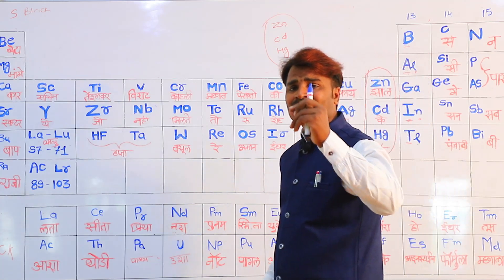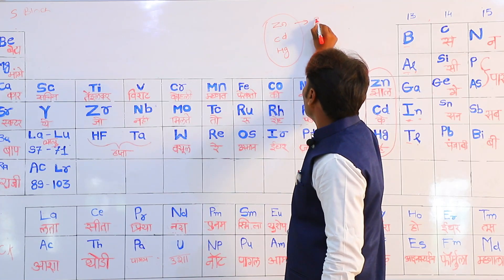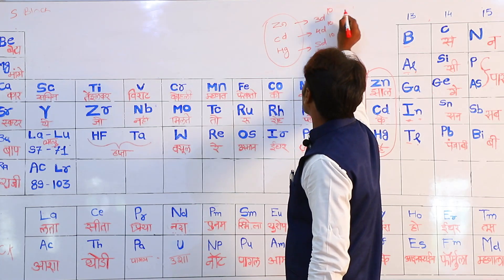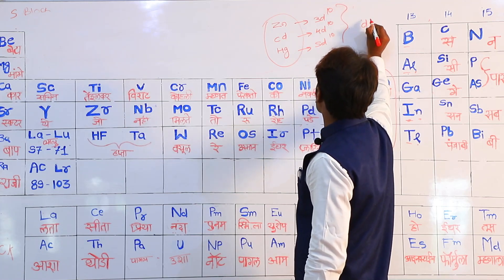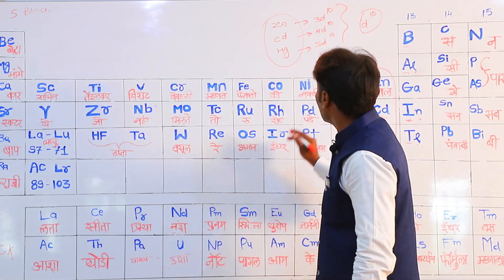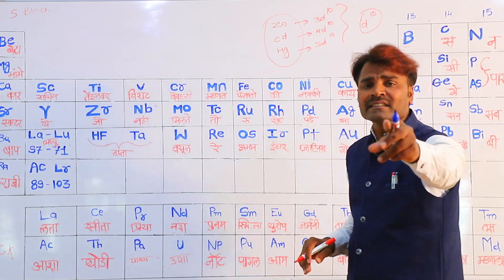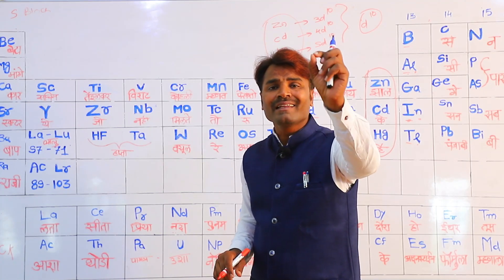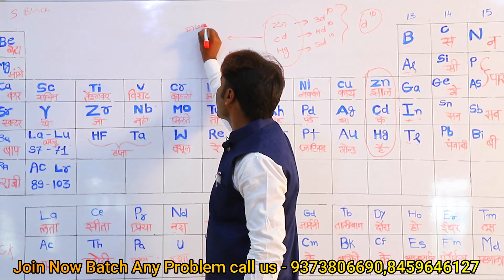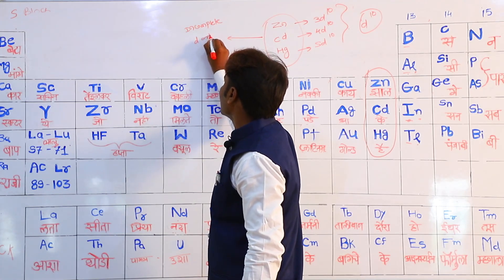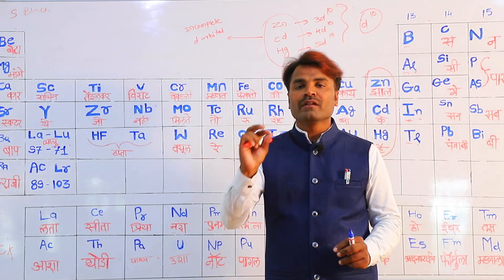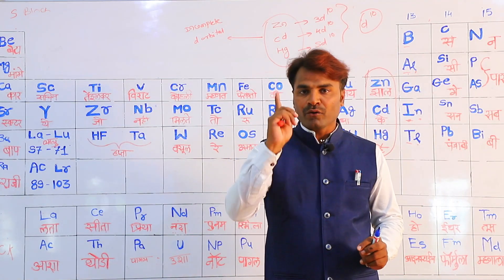Zinc, Cadmium (Cd), and Mercury (Hg) are not transition series elements because their electronic configuration is 3D10, 4D10, 5D10 — the D-orbital is completely filled. To be a transition series element, one criteria is that the D-orbital must be incomplete. Since Zn, Cd, Hg have completely filled D-orbitals, they are not transition elements, but they are part of the D-block.